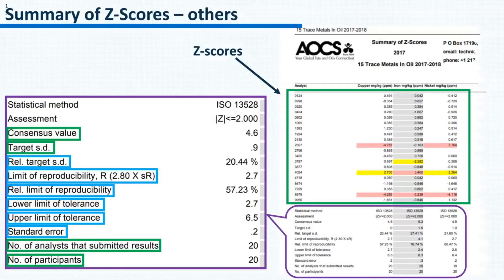The lower limit of tolerance is the consensus value minus 2 standard deviations. To sum it up, the second part of the report contains the z-scores, which are useful in monitoring the performance.